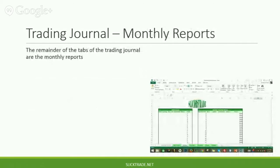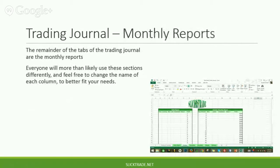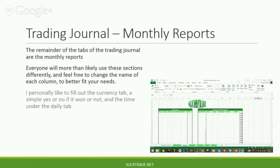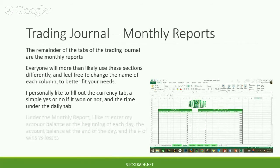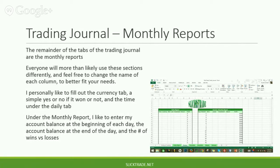The next tabs are your monthly reports, named October, November, December — each month separately. Everyone will more than likely use these sections differently, and feel free to change the name of each column to better fit your needs. I personally like to fill out the currency tab, a simple yes or no if it won or not, and the time under the daily tab. Under the monthly report, I like to enter my account balance at the beginning of each day, the account balance at the end of the day, and the number of wins versus losses. At the bottom, it will automatically calculate your winning percentage rate and your profit for the month as you go through each day.